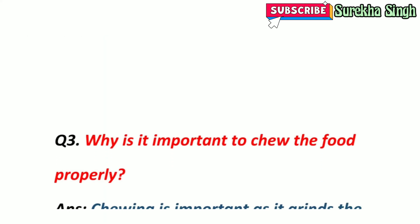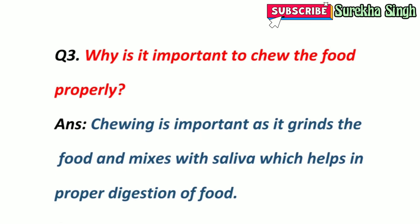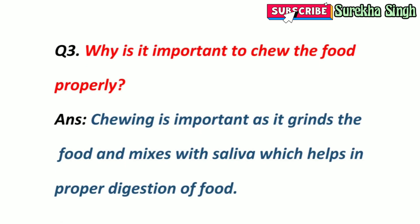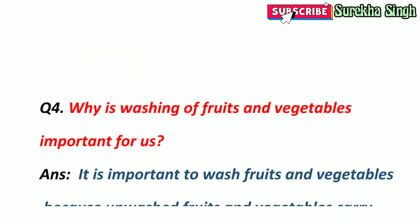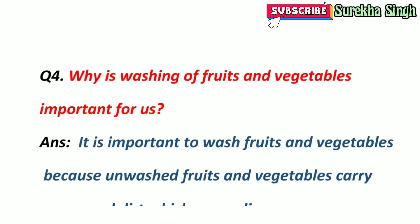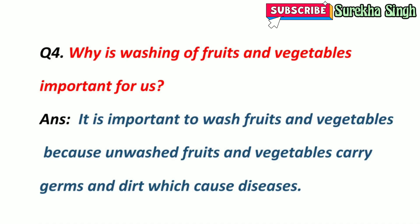3. Why is it important to chew food properly? Chewing is important as it grinds the food and mixes it with saliva, which helps in proper digestion. 4. Why is washing of fruits and vegetables important for us? Washing of fruits and vegetables is important because unwashed fruits and vegetables carry germs and dirt which cause diseases.